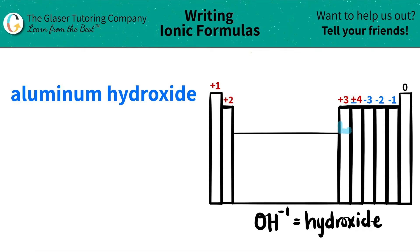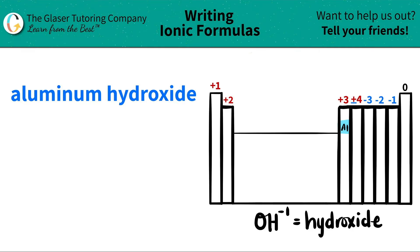Aluminum is right here. Aluminum is represented as Al, and aluminum is in this group over here. Generally, they are plus three charges — they lose three electrons. So I'm going to say Al is a plus three.